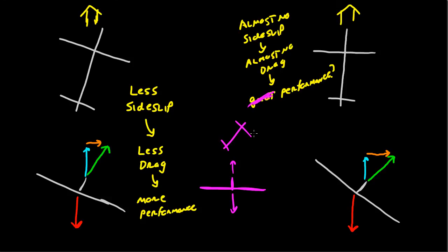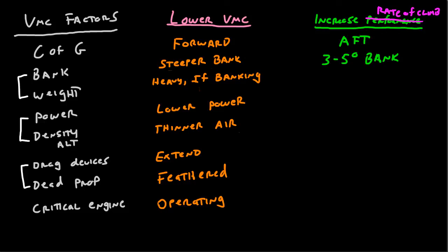So really, the question here is not should I bank a whole bunch or should I bank zero. The answer is you should bank 3 to 5 degrees, because that's going to strike the perfect balance. It's going to give you minimum sideslip while still giving you maximum vertical lift, which is why you want 3 to 5 degrees of bank.